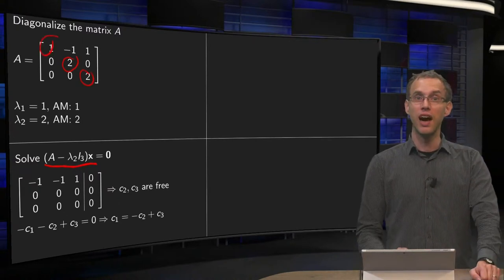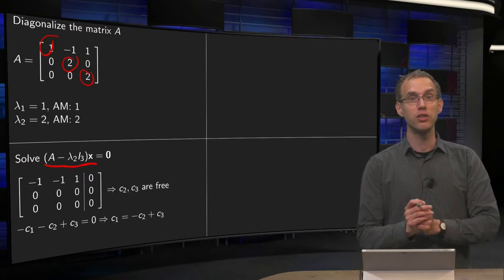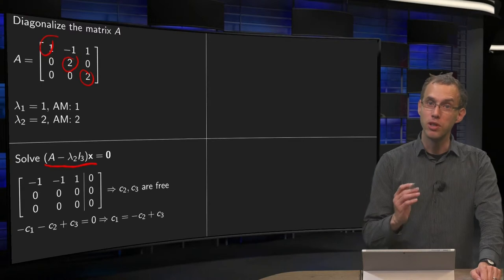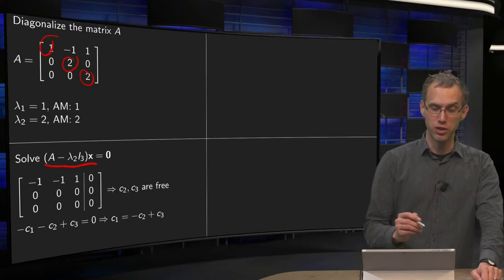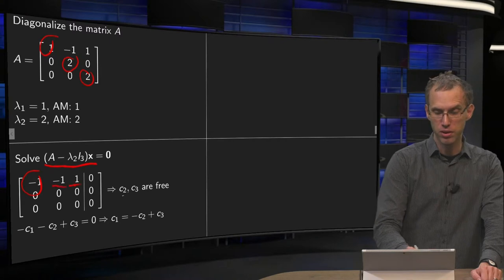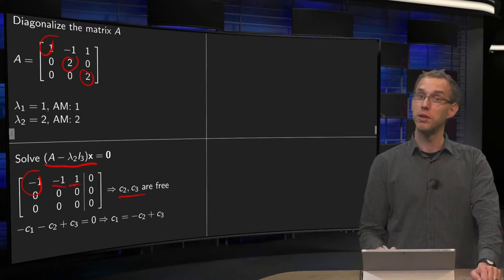We augment with 0's. We don't have to do any row reduction, the augmented matrix is already in echelon form, so we can solve our system. We have one pivot, two free variables, so c2 and c3 can be chosen free.